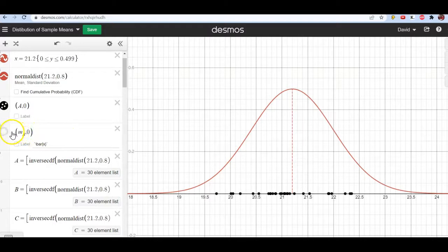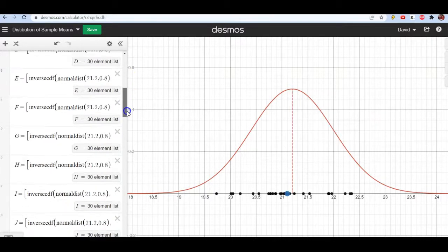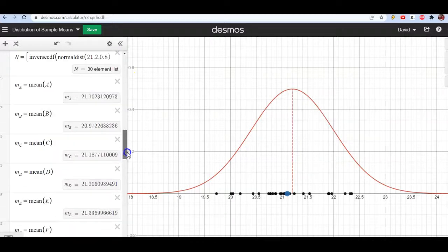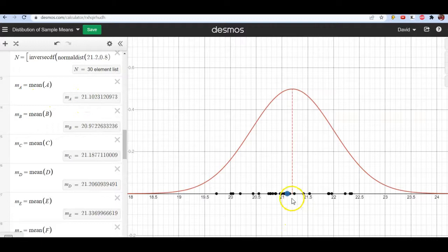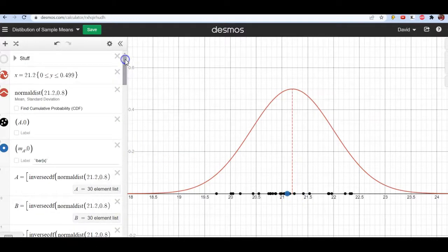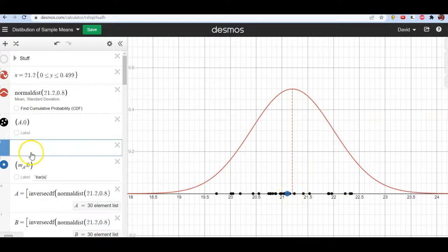Now this next dot, it's much bigger than the others because I want to emphasize it. This is the average of those 30 numbers. So this is the sample mean there. 21.1 is the sample mean. And you can see right beside it again, the population mean is 21.2. So the sample mean didn't hit it exactly, but it was close.